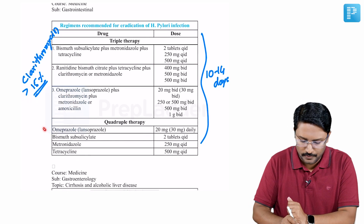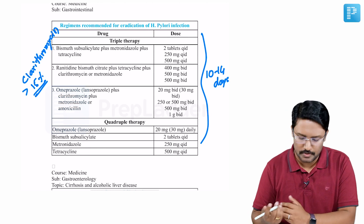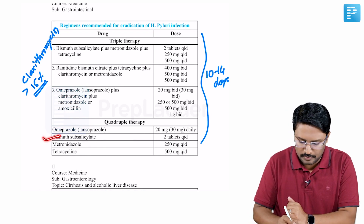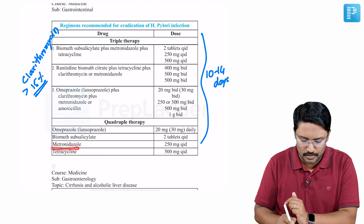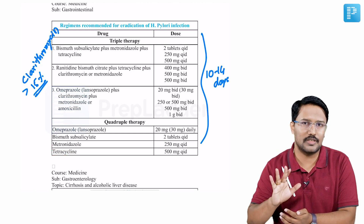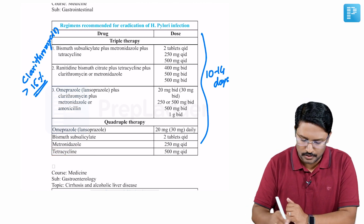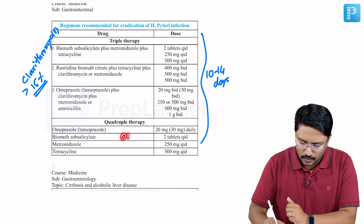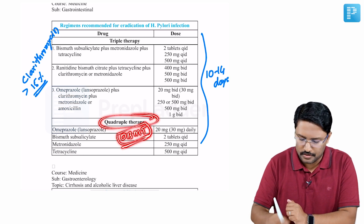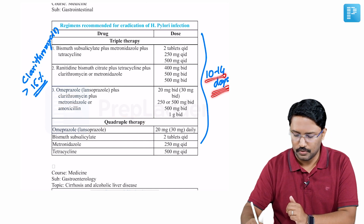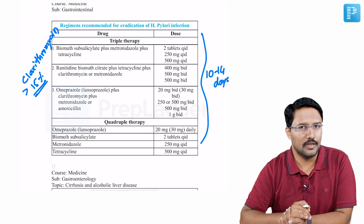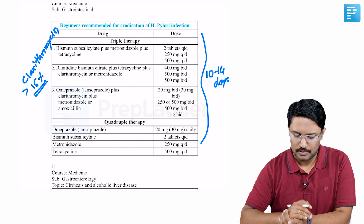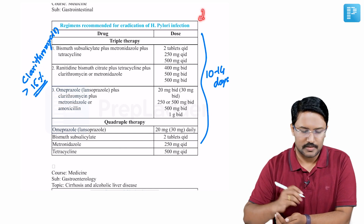The components of quadruple therapy are: omeprazole (a PPI), bismuth subsalicylate, metronidazole, and tetracycline — easy to remember as OBMT. OBMT is the combination for quadruple therapy, with a duration of 10 to 14 days. That is a quick summary of the treatment of H. pylori infection from the PrepLadder NETSS Treasures.